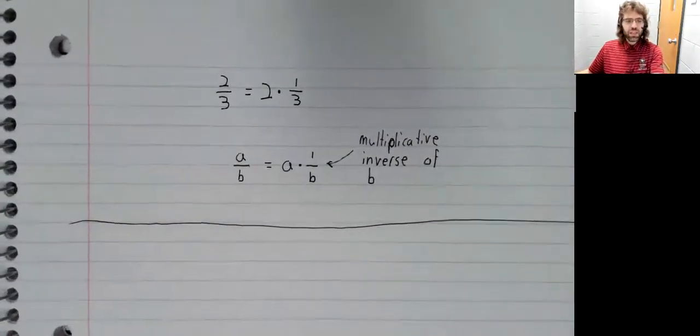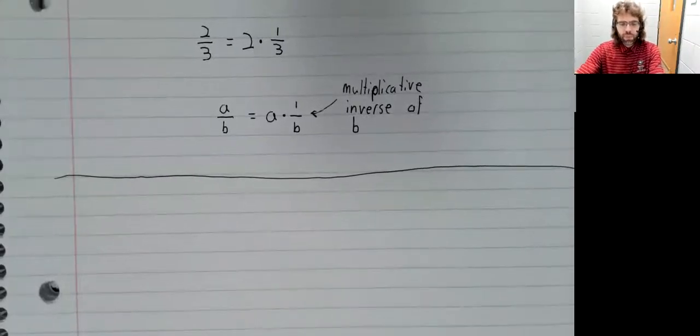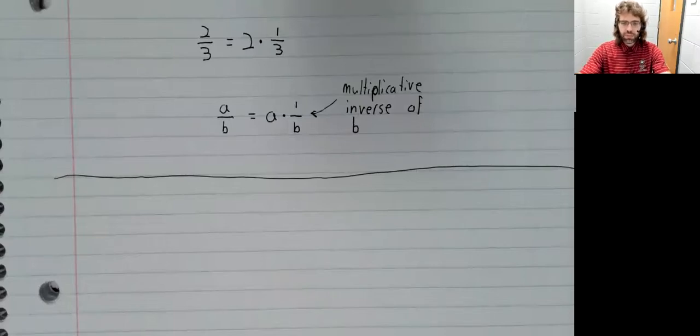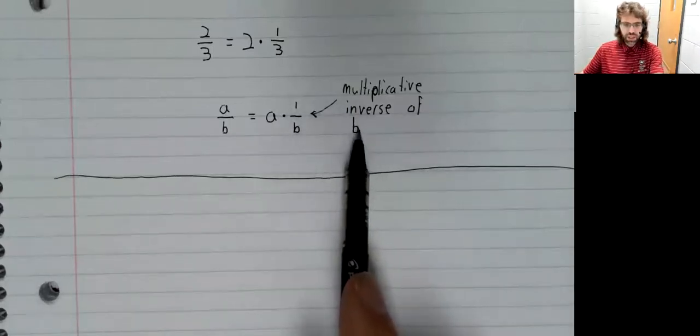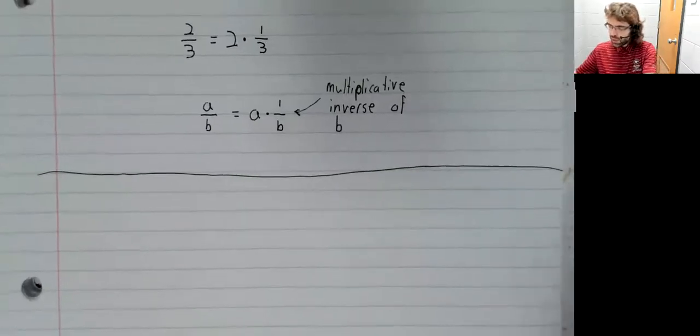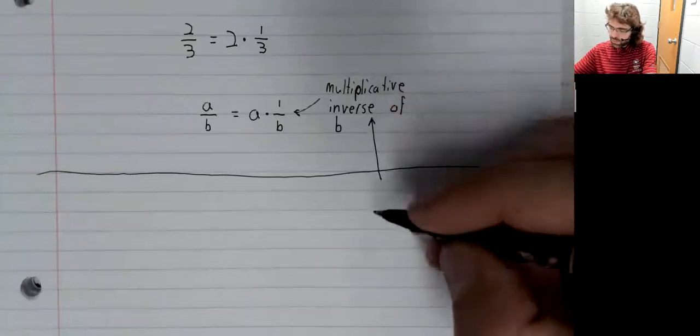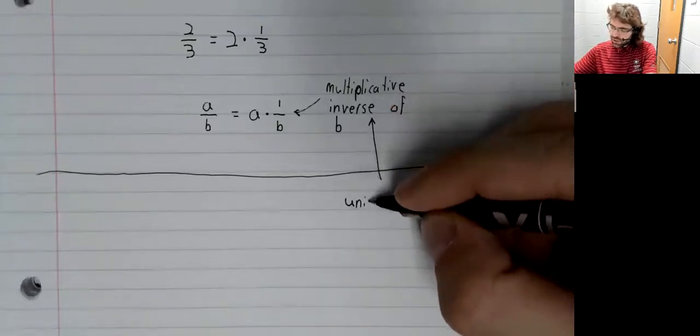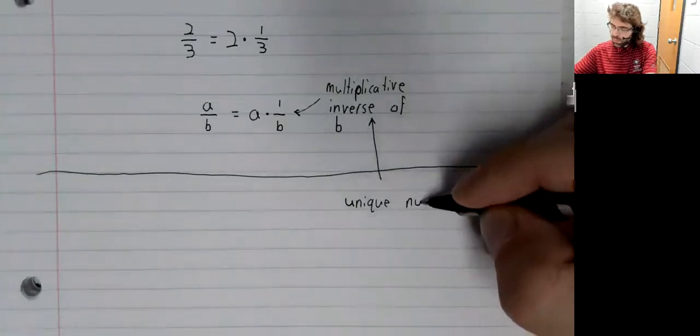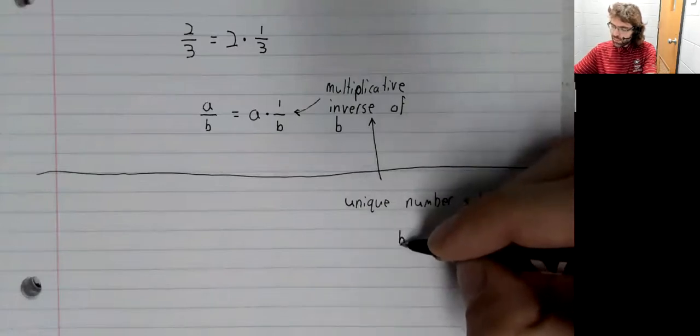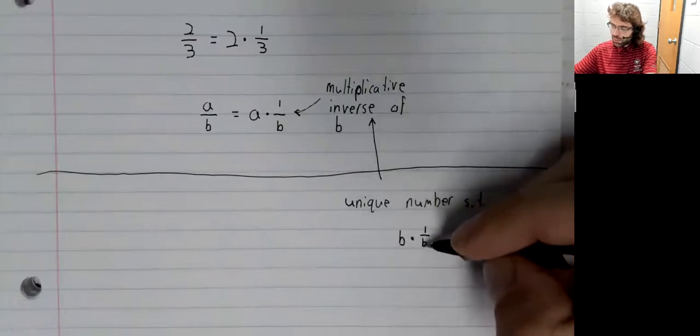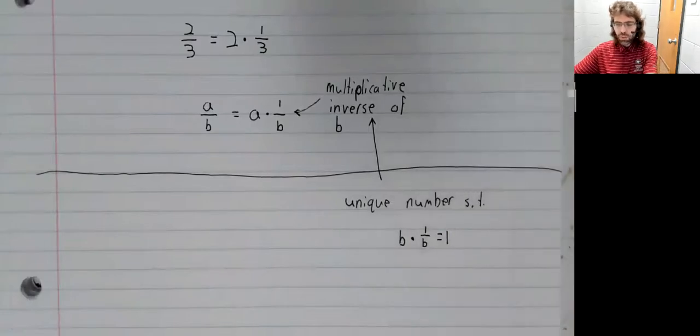For matrices, we don't have division, but we do have multiplicative inverses, at least some of the time. How can we define the multiplicative inverse of B? We could say that this is the unique number such that B times that number equals one.